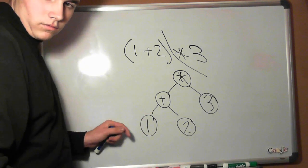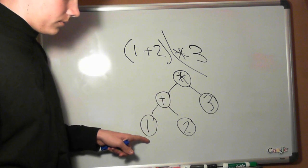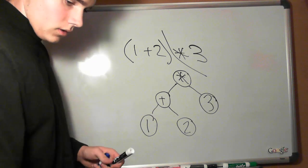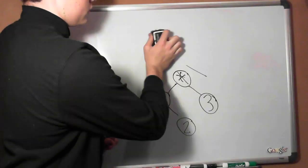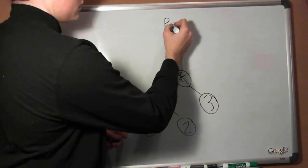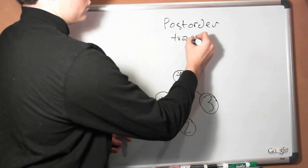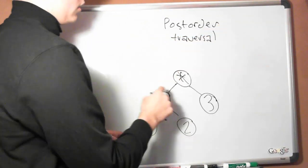So we have our basic binary tree here. Now say we wanted to convert this expression into postfix notation. We would use the postorder traversal of this binary tree.